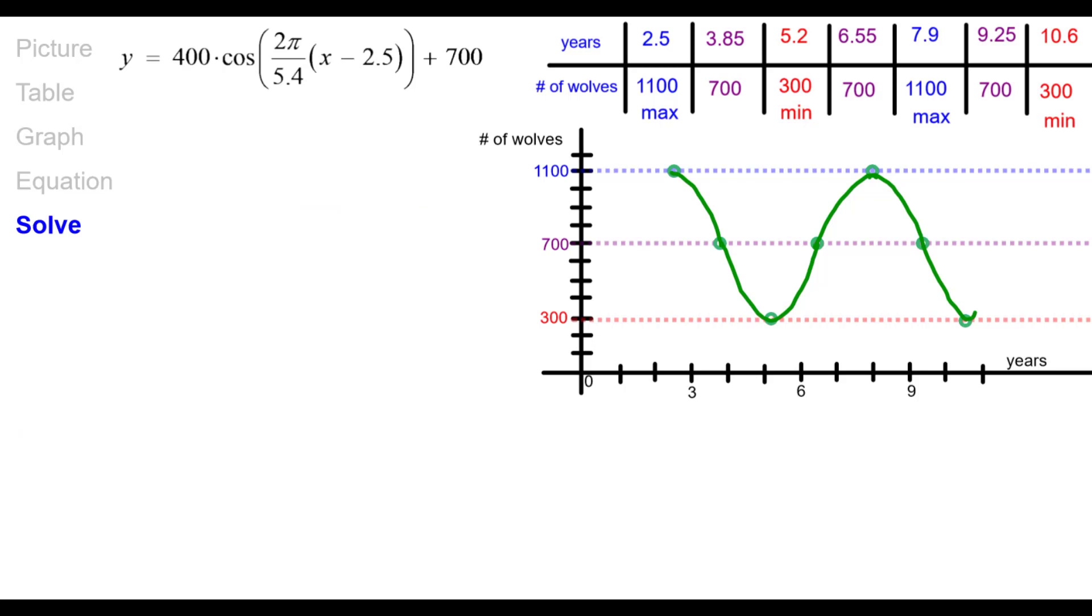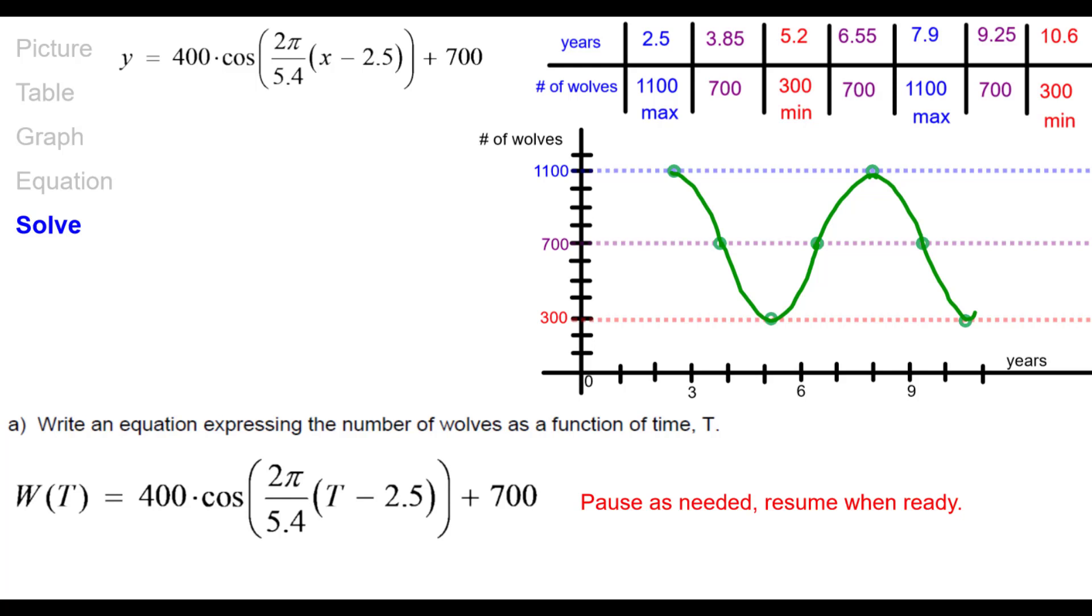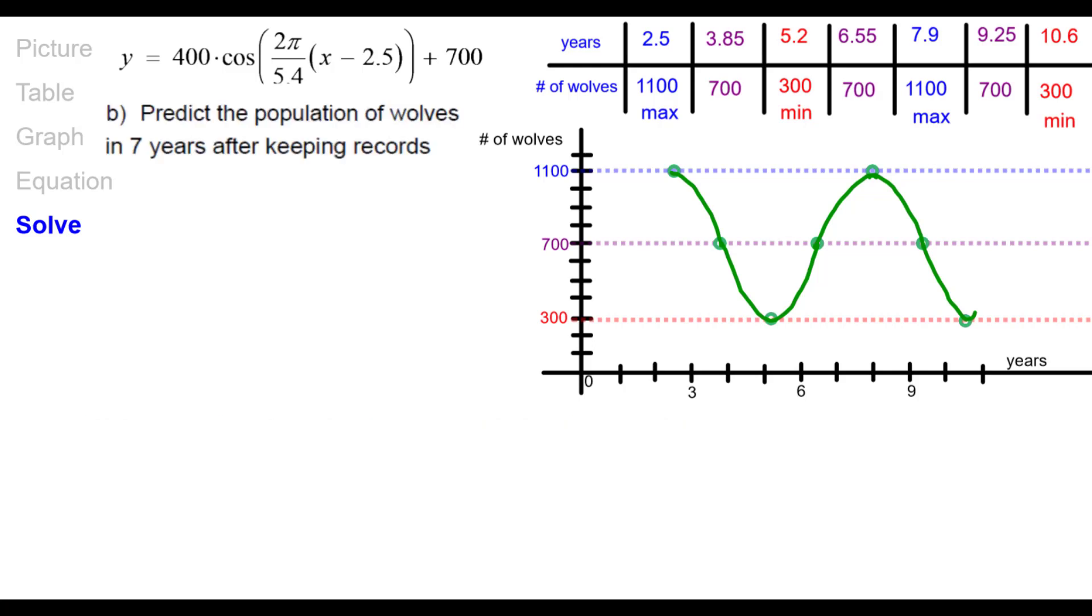Now we're ready to go ahead and solve. Took all this time and now we're ready to go ahead and solve all the questions. Answer the questions. First one is to write an equation expressing the number of wolves as a function of time in terms of t. Okay, so we can use the same equation except now we're going to say that number of wolves, capital W is a function of capital T time in years. And we replace the x with a t. So it's pretty much the same equation just using function notation.